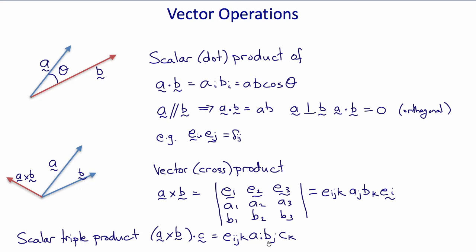Note that all of the indices here are dummy indices or repeated indices, so there's no free index. Therefore, the result is a scalar, which we would deduce because the cross product is a vector, and a vector dotted with another vector is a scalar.